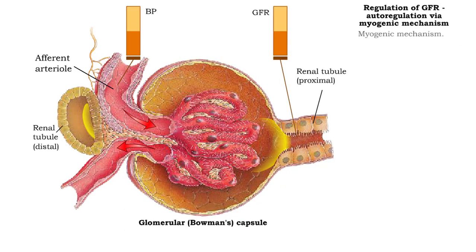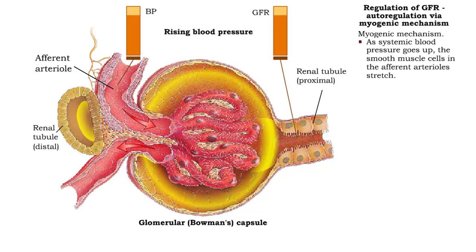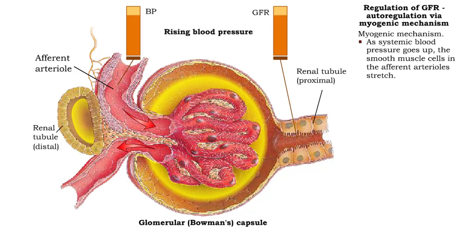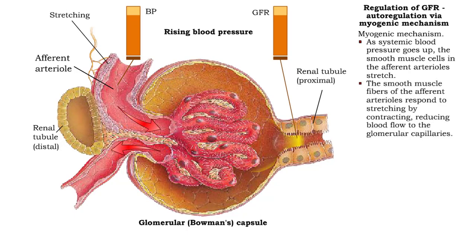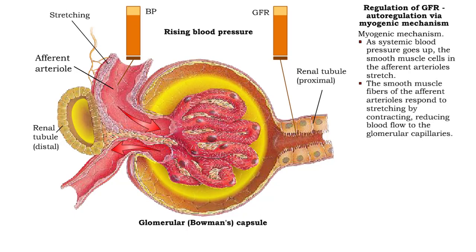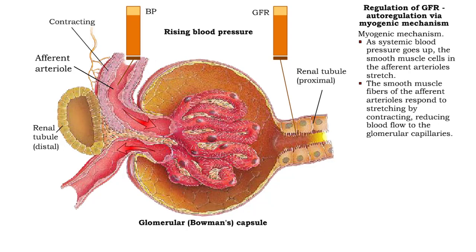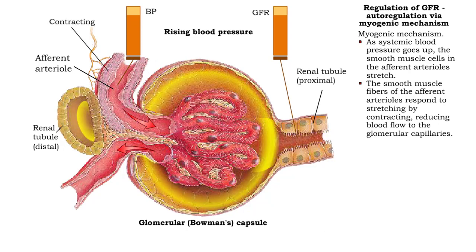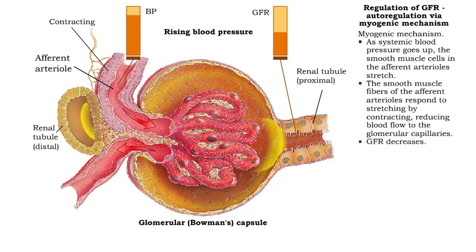First there is the myogenic mechanism. As systemic blood pressure goes up, the smooth muscle cells in the afferent arterioles stretch. The smooth muscle fibers of the afferent arterioles respond to stretching by contracting, thereby reducing blood flow to the glomerular capillaries. Glomerular filtration rate decreases.